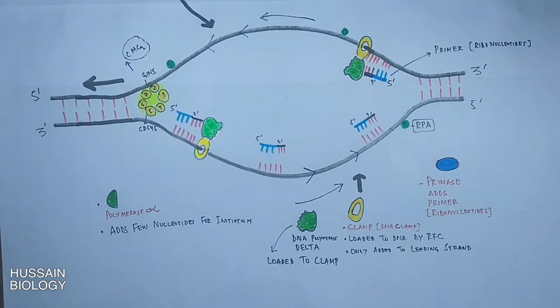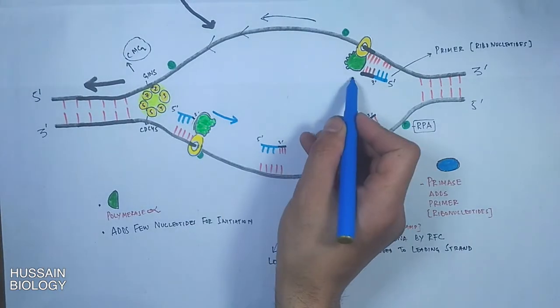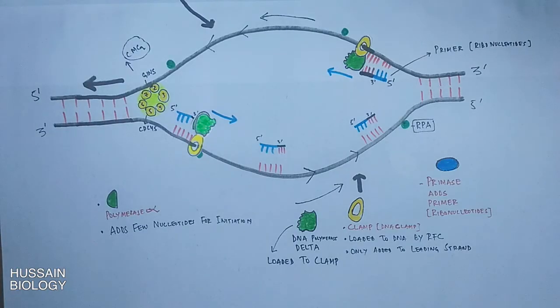Now the elongation part starts from here. It must be noted that DNA polymerase works 5 prime to 3 prime end. That means DNA polymerase delta adds deoxynucleotides to hydroxyl 3 prime end only.